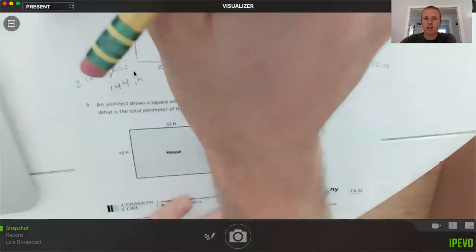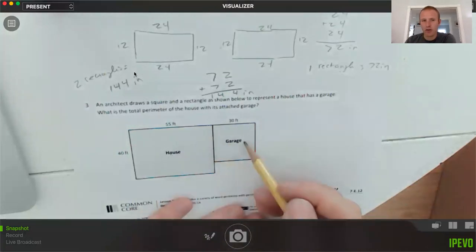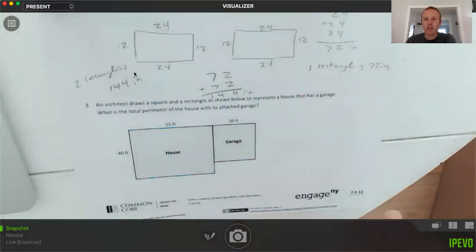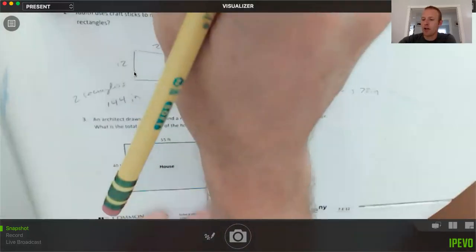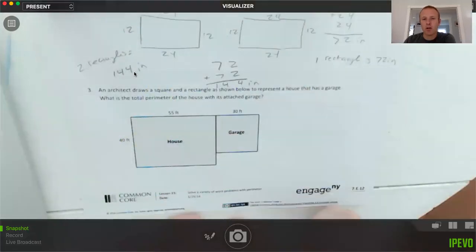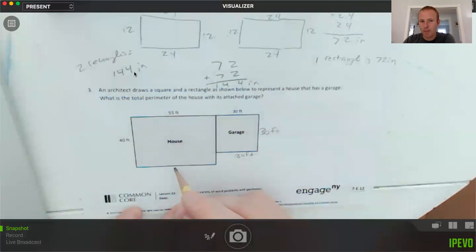The next one: an architect draws a square and a rectangle as shown below to represent a house that has a garage. So house here, garage here. What's the total perimeter of the house with the attached garage? So we just have to use some basic properties of geometry here, knowing our shapes and the properties of each shape to figure out the sides that are missing. So if this is a square garage, if that's 30, this is 30 and this is 30. If this is 55, then the opposite side is 55 because that's a rectangle. We know rectangles have opposite sides with the same length.